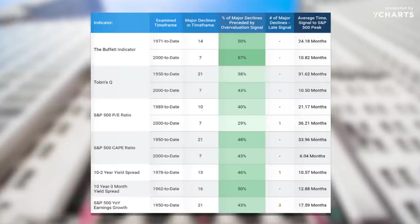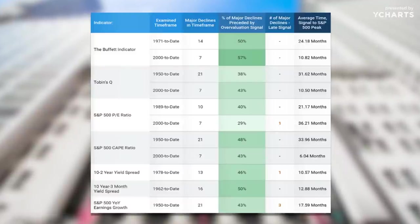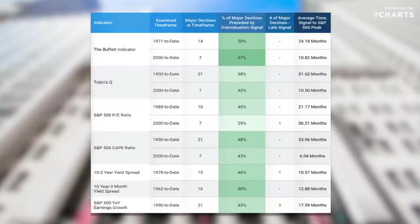When they look at the average time between these signals saying things are out of whack versus when the peak actually happens, a lot of times it's 6, 12, or 24 months into the future. The one thing I come away with is that there are no indicators you can use every time, all the time, that work for you. Every peak is different. If you look at negative year-over-year earnings growth, it basically never works — it works fewer times than it doesn't. This is a good reminder of being humble about a lot of these things.